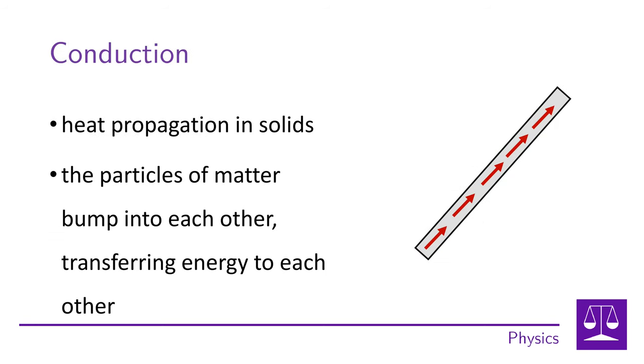The first method is heat conduction. It is the transfer of heat from a hotter object to a colder one in all types of states. Conduction is caused by the movement of particles inside the substance, which collide with each other, and transfer energy. In substances with higher temperatures, particles move faster, so they have more energy.